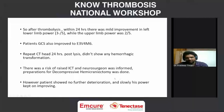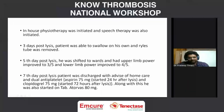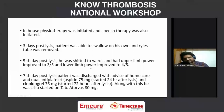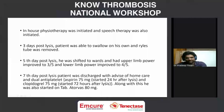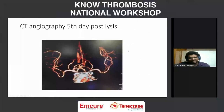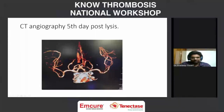She kept on improving. By day three she was able to swallow on her own and the nasogastric tube was removed. By day five, power improved to 4/5 in the lower limb and 3/5 in the upper limb. On day seven post-lysis she was advised discharge on dual antiplatelets and atorvastatin. The CT angiography done on day five post-lysis shows recanalization of the MCA artery with tenecteplase infusion.